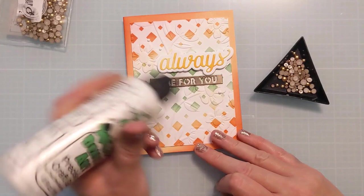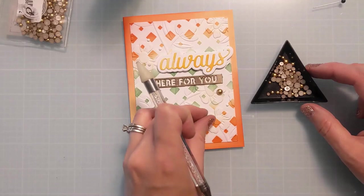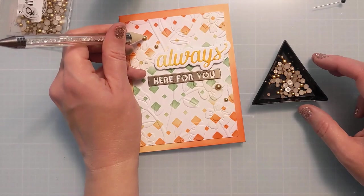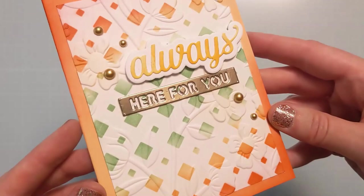And then I have these little gold flat back pearls. These are from Pinkfresh Studio and they're in all different sizes. So I'm just going to use some liquid glue and put those down. Three on the top, two on the bottom. I like to work in odd numbers. I find them more visually appealing. But the gold really matches the gold of the metallic cardstock on the here for you die cut. So it all tied everything together.